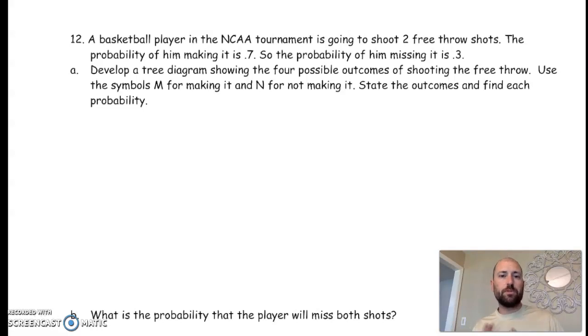Okay, we go with our last question, the probability review number 12. A basketball player in the NCAA tournament is going to shoot two free throw shots. The probability of making it is 0.7, so the probability of missing is going to be 0.3.